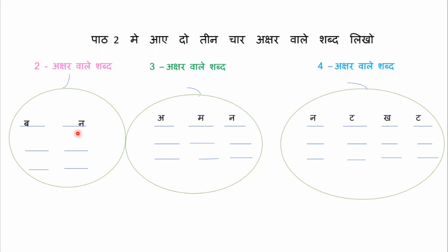Ab, ba, na, ban, chal — these are 2-letter words. So you have to write 2-letter words here. Aman — 3-letter words. You have to write 2 words each, children. That's all for today. Next time we will meet with a new part. Goodbye, children.